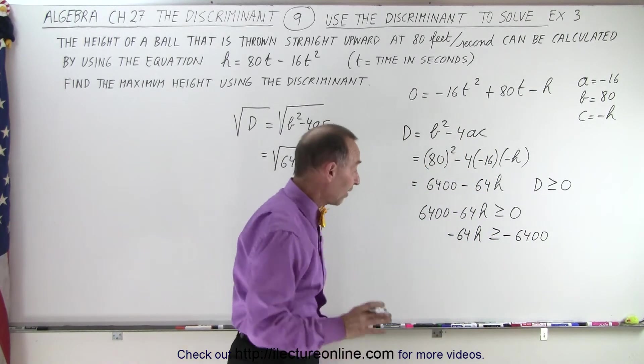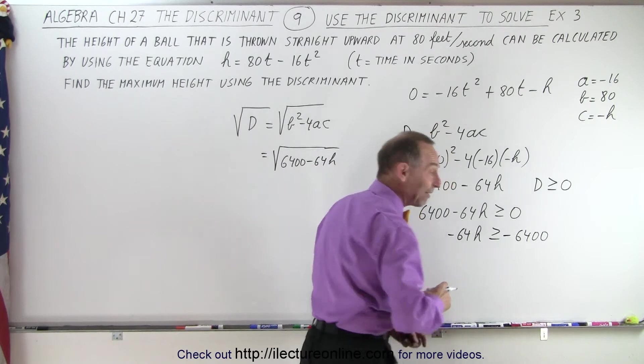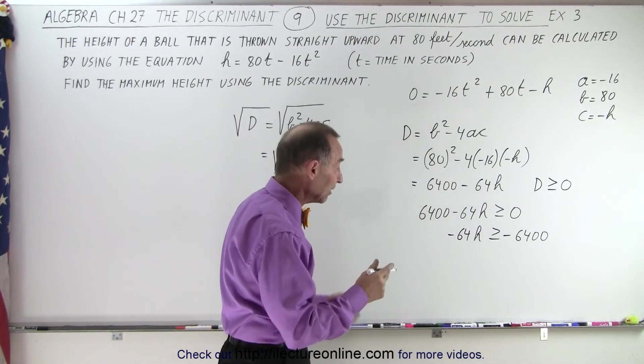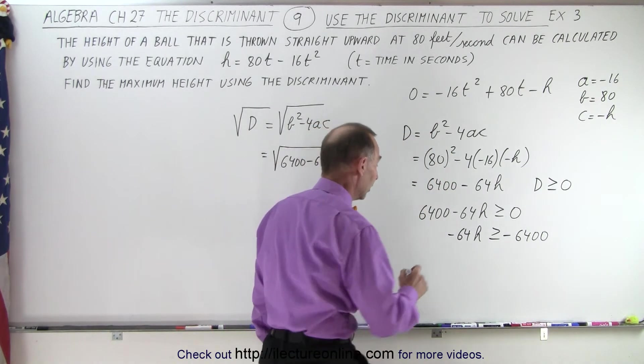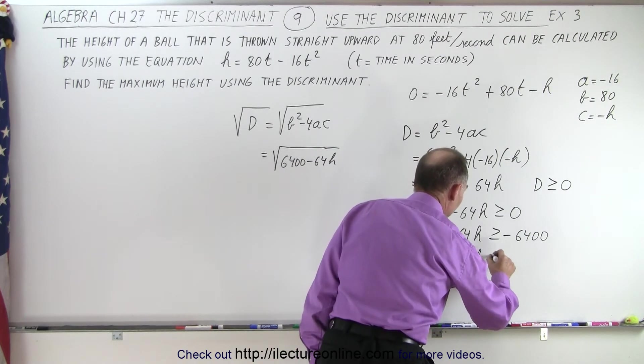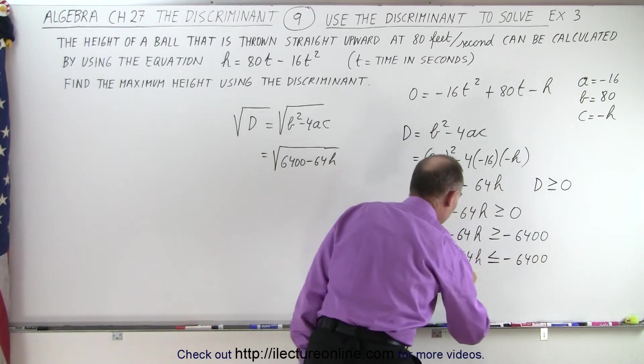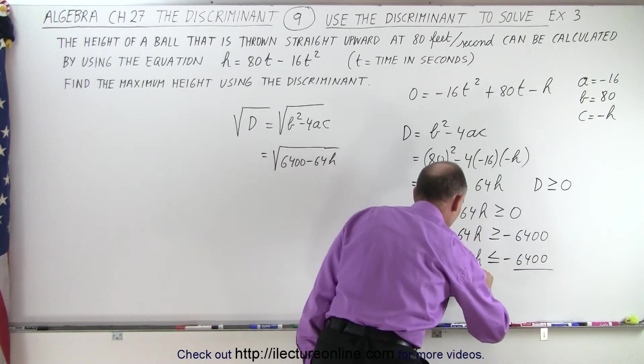Now we're going to divide both sides by the negative coefficient in front of h. Of course, when we have an inequality and we divide by a negative number, we need to flip the sign. So that means h is now less than or equal to 100 when we divide both sides by -64.